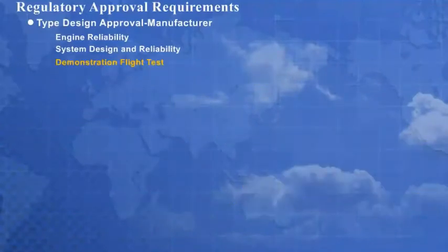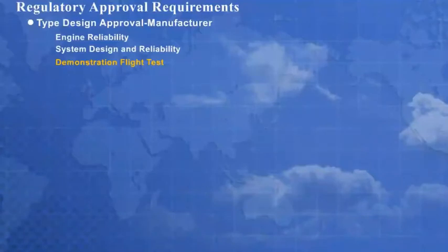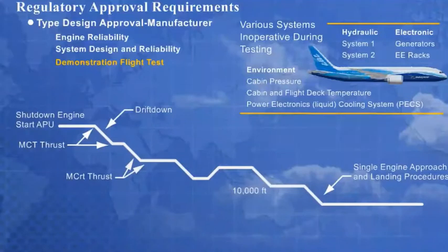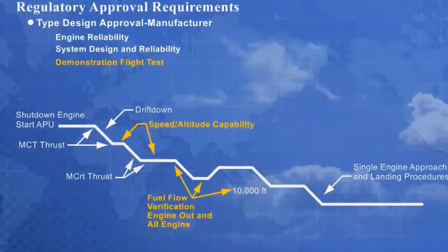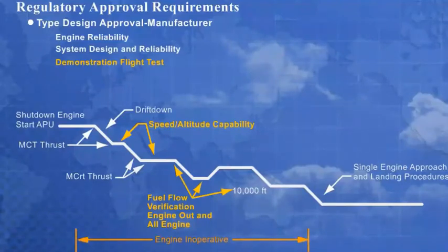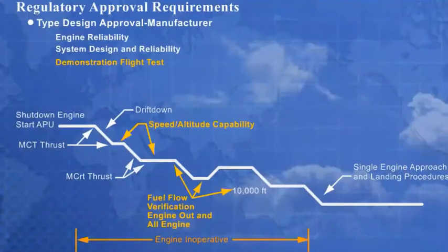The final step in attaining ETOPS type design approval typically involves a manufacturer's demonstration flight test program. The flight test program verifies the airplane's flying qualities and the flight crew workload with various systems inoperative. Flight testing is also used to verify the airplane's ETOPS-related performance. Engine-inoperative segments in excess of 330 minutes are typically performed on modern long-range ETOPS airplanes to demonstrate unrestricted routing capability.